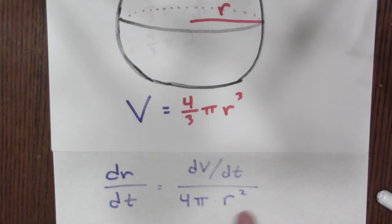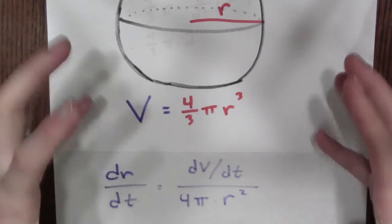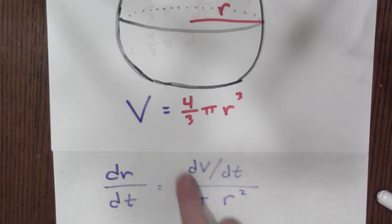But it also depends upon the radius, right? This r² in the denominator. In particular, a really big balloon is bigger for a given change in volume compared to a little tiny balloon, which gets quite a bit bigger for the same change in volume. It all has to do with that r² in the denominator.